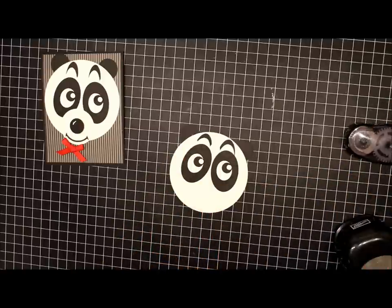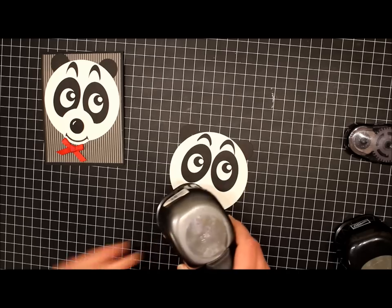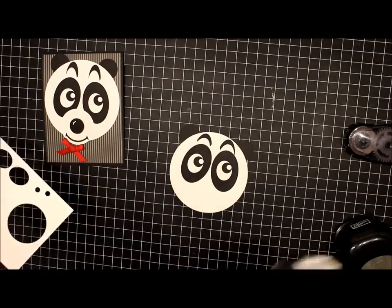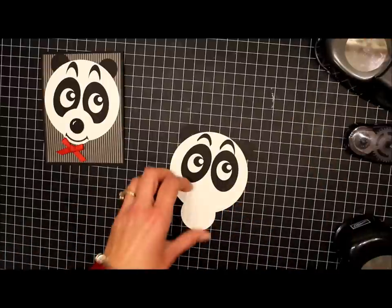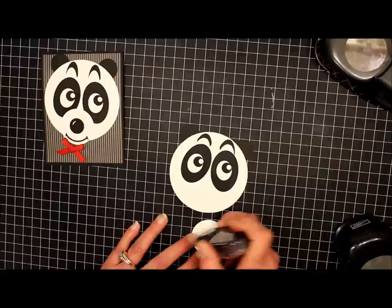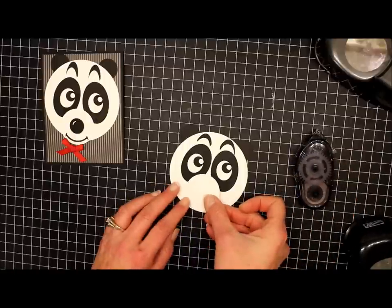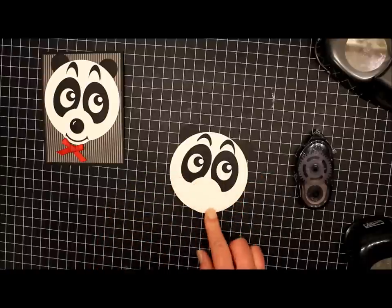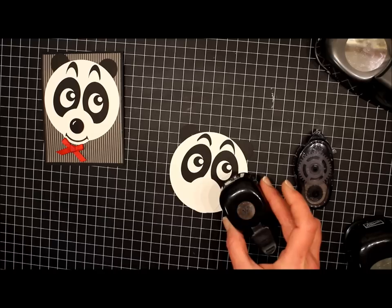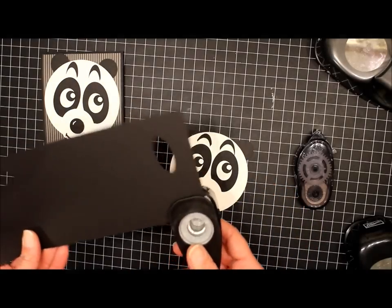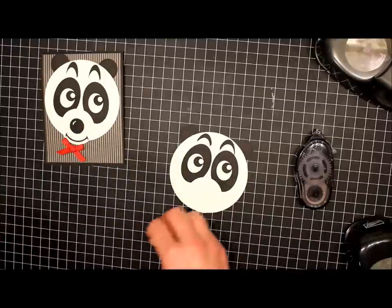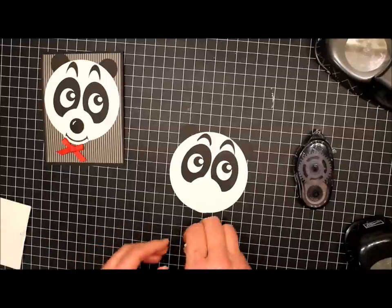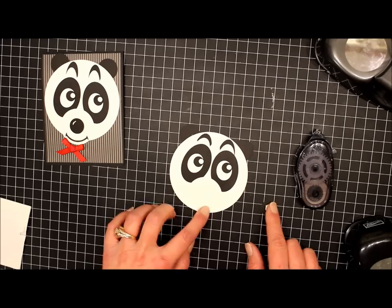Now for his nose, I use the one and three quarter inch circle punch and another piece of whisper white. We'll attach it. And here I overlap the black just a little bit. And then for his nose, I use the three quarter inch circle punch in black. And we're going to pop this one up with the dimensional. Before we do that, let's draw his mouth on.